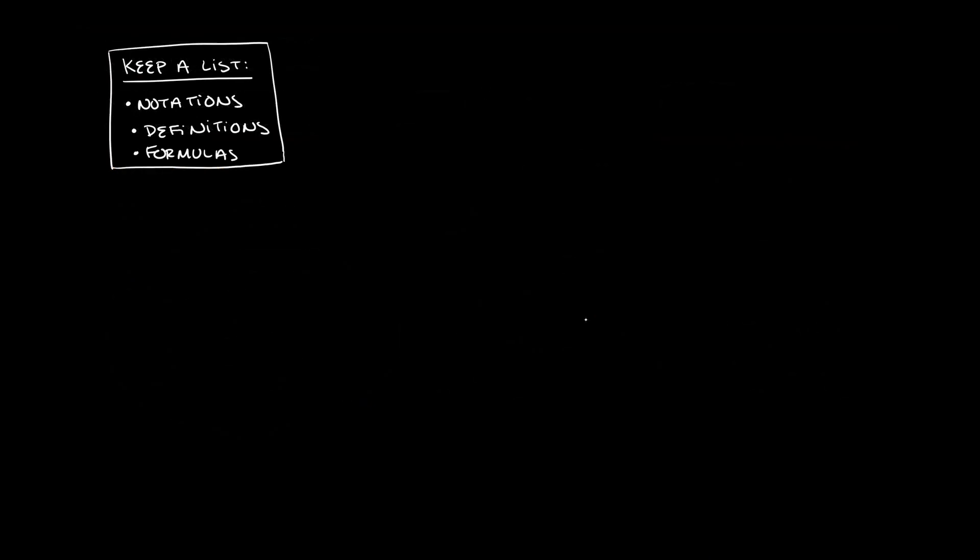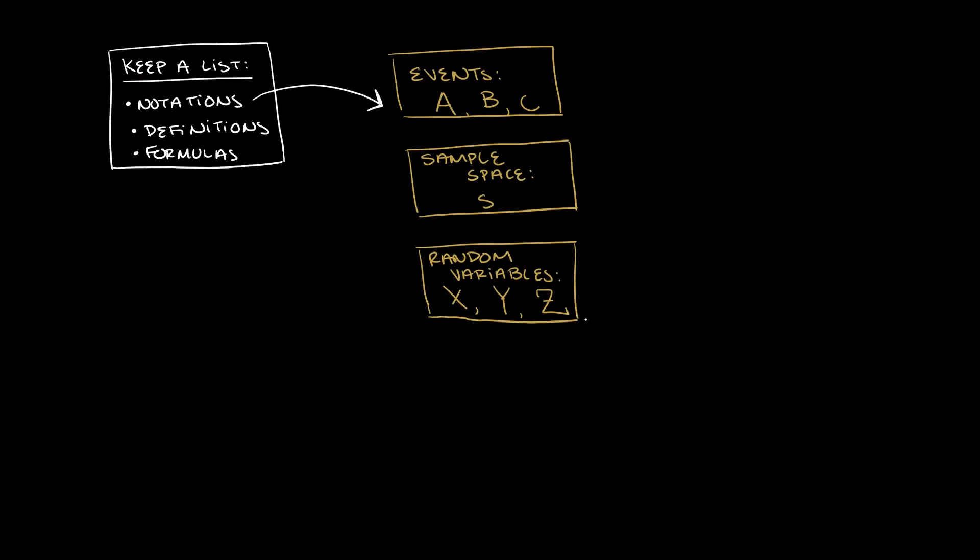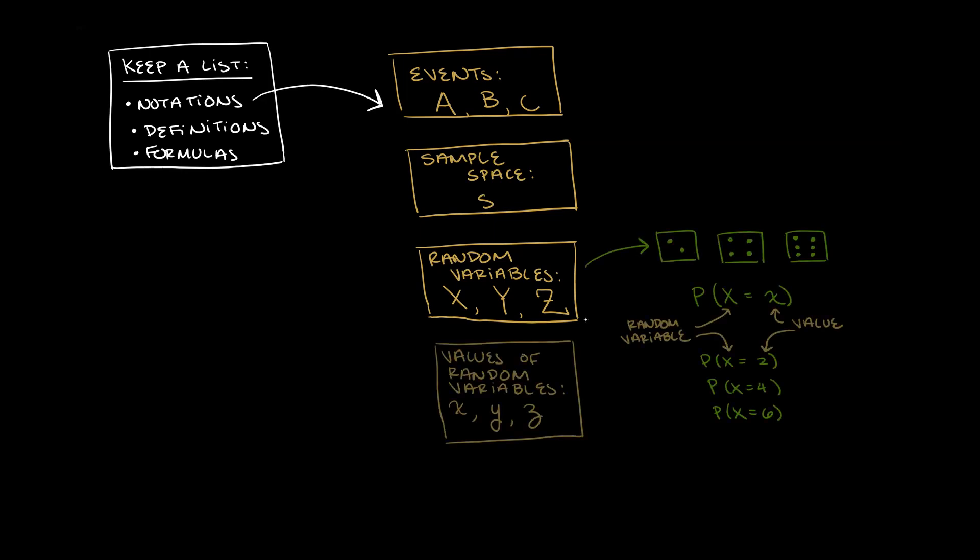Another tip is to keep a running list of notation, definitions, and formulas. For example, what's the difference between a capital letter X and a lowercase letter x when we are talking about random variables? Well, it turns out, capital letters are the random variable which can represent any outcome of a random experiment, like rolling an even number on a die. Lowercase letters are the values of the random variables, which would be 2, 4, or 6 in this example.